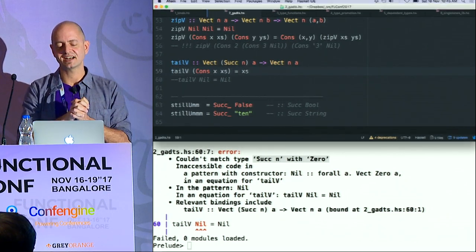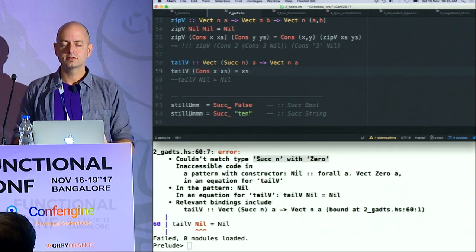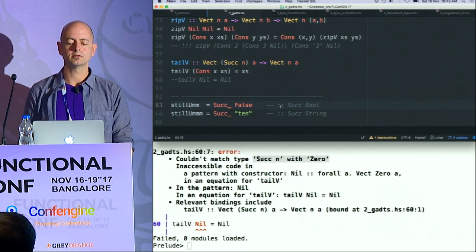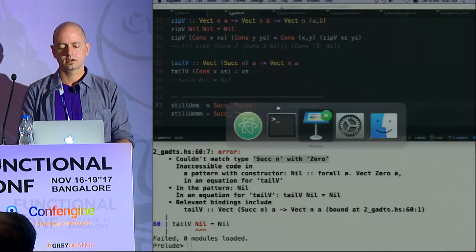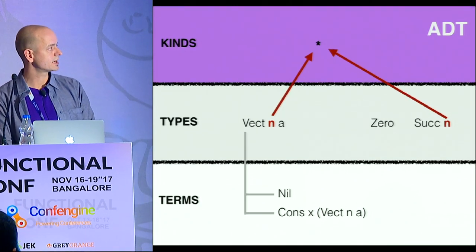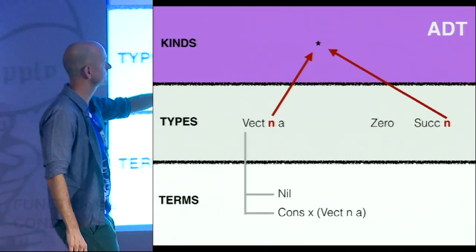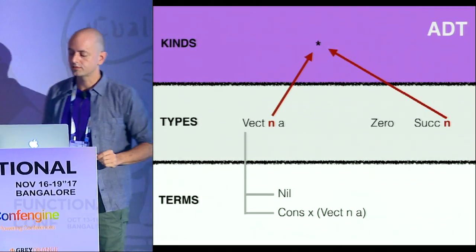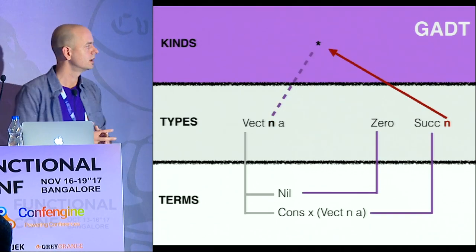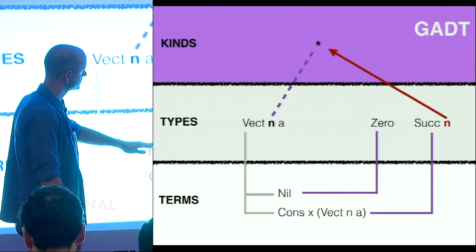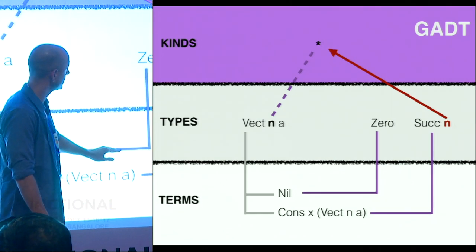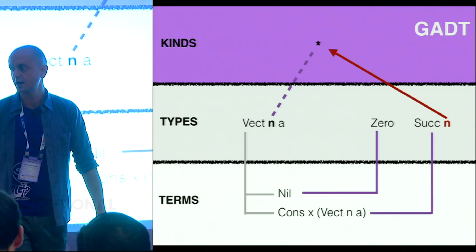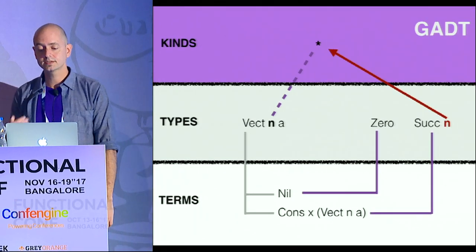We've solved Vector a bit, but with Successor I can still shove any type in there and the compiler will be perfectly happy. With the ADT, N was free — I could put any type in. With a Generalized Algebraic Data Type, I've taken the vector with terms Null and Cons and connected each term with the type: Cons is at least size one, Null is always size Zero. So I've constrained that N in Vector N by using GADTs.